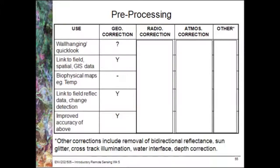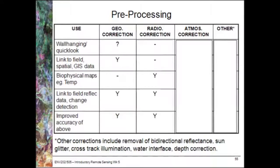If you'd like to create biophysical information, you don't necessarily need geometric correction. But again, if you'd like to link that with other GIS data, then yes, you would. If you need to link to field reflectance data that's been tagged with GPS, or perform any change detection, then you need to do geometric correction. And for improved accuracy of any of the above, you'd need to do it as well. In terms of radiometric correction, for a wall hanging or a quick look, you don't need to perform any radiometric correction.